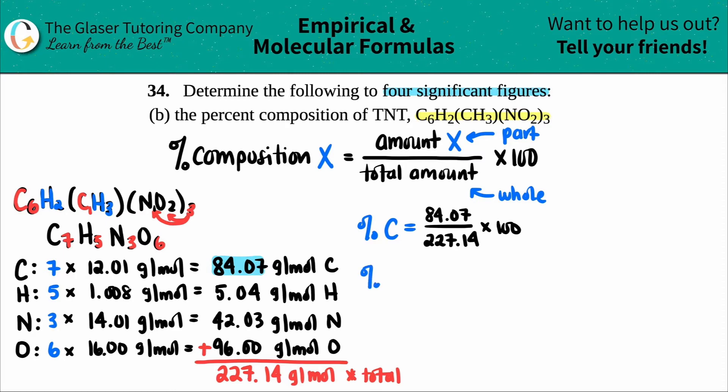Next one, percent hydrogen. The total percent for hydrogen is 5.04, so I'm going to say 5.04, and that's all divided by the total molar mass, 227.14, and just multiply that by 100. Next, we got the percent of nitrogen. Percent of nitrogen is this total number of nitrogen. So 42.03, all divided by the total molar mass, which is the 227.14, times up by 100.